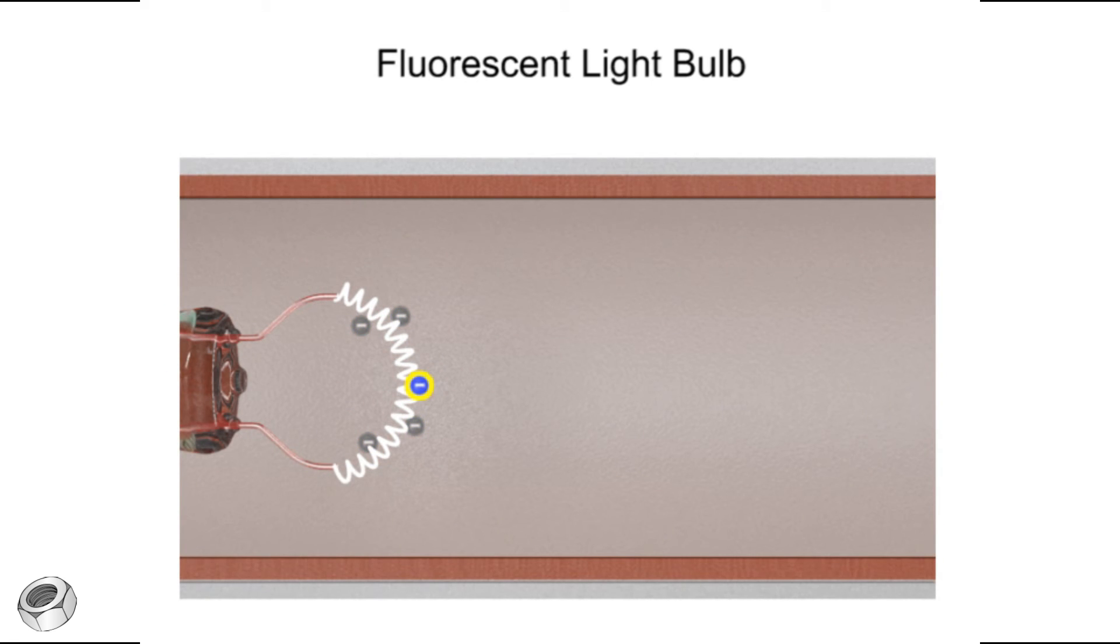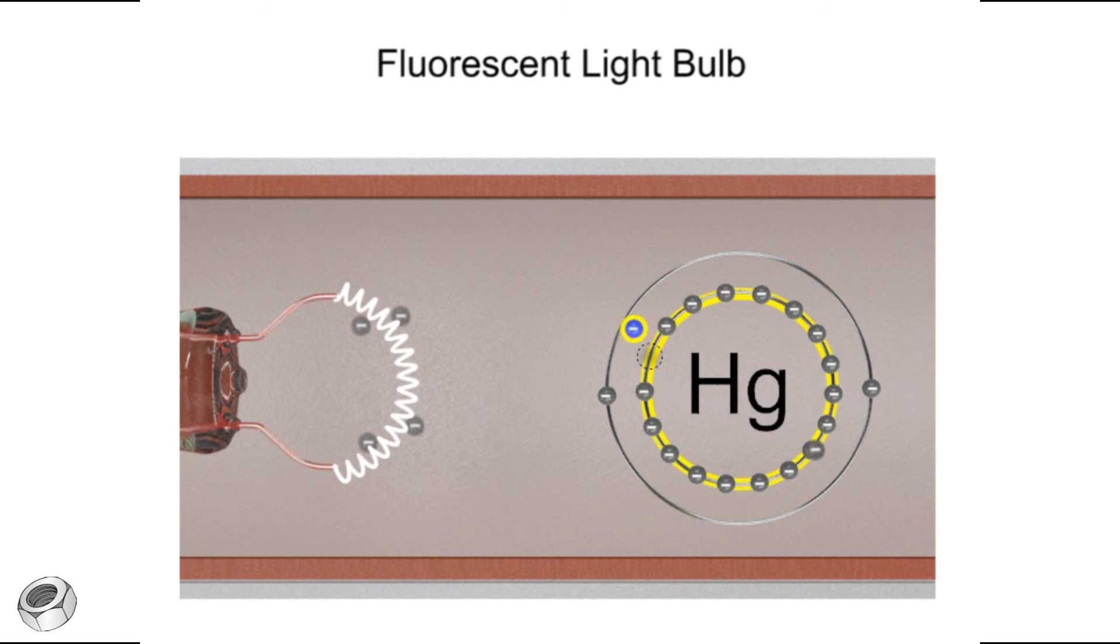If one of the free electrons collides with an electron of the mercury vapor, the electron is bumped from a lower to a higher energy level. The electron quickly returns to its lower energy state and in the process releases an ultraviolet photon.